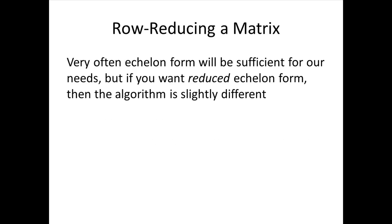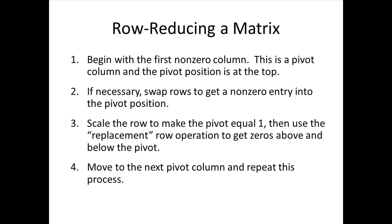Often echelon form is sufficient, but sometimes we want the matrix in reduced echelon form, where the algorithm is slightly different. We modify step three: begin with the first non-zero column, which is always a pivot column with the pivot position at the top. If necessary, swap rows to get a non-zero entry in that pivot position. Then scale the row to make the pivot equal one — remember all pivots must equal one in reduced echelon form. Then use the replacement row operation to get zeros both above and below the pivot. Move on to the next pivot column and repeat.